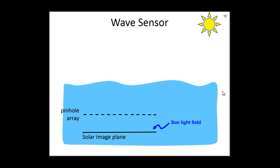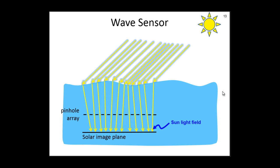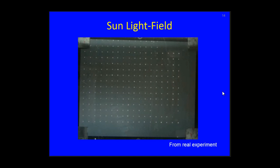When the water surface is wavy, Sun rays refract according to the waves and project to the solar image plane. We obtain a distorted grid of Sun imagelets. Here is an example from a real experiment of the Sun light field under varying water waves. Each blob is an image of the Sun corresponding to one pinhole. You can see how random waves cause random displacements in the grid.